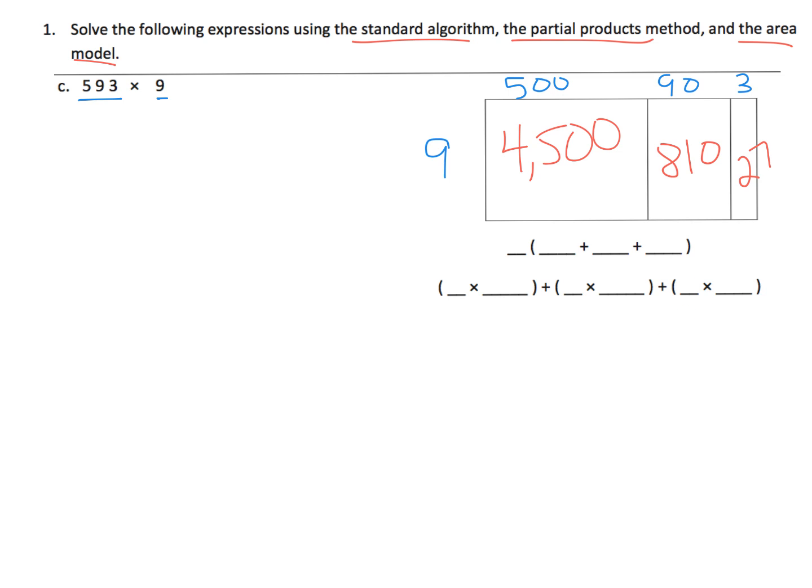Down here in the distributive property, what they want us to write is 9 is being multiplied against 500, 90, and 3. Now right here, they want us to show that what did we do? Well, we did 9 times 500, so I'll squeeze that in here, and then 9 times 90, and finally 9 times 3. We should continue and label that 4,500 plus 810 plus 27. And now we're going to add these three numbers.